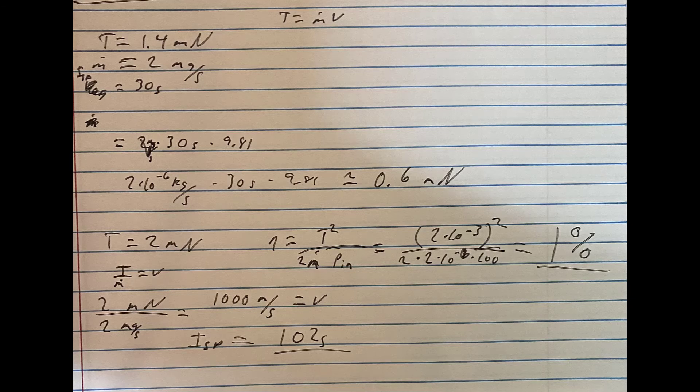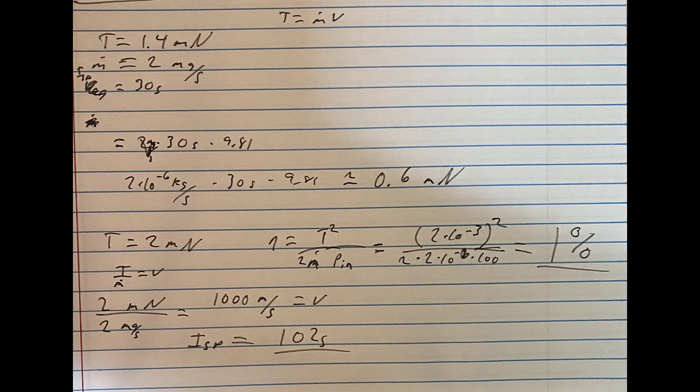So we'll quickly talk about some of the performance aspects of this thruster. The short answer is I think we've successfully made the world's worst Hall Effect thruster, while still being able to technically call it a Hall Effect thruster. That being said, we noticed a thrust of 1.4 mN.